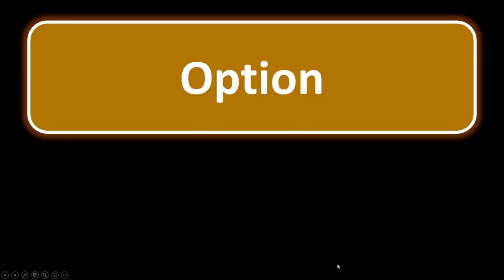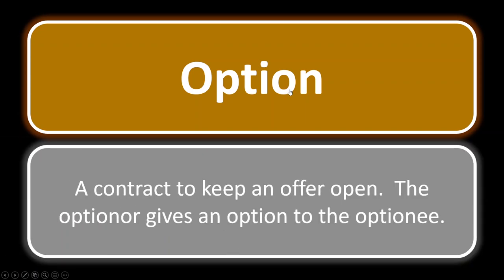Option. An option is a contract to keep an offer open. You can have an option listing, or for instance, a tenant who has the option to purchase — paying more in rent in exchange for having the option to buy at a predetermined price at a certain time. The optionor gives the option to the optionee. The optionor must keep the offer open, while the optionee is the one who can actually exercise the option.